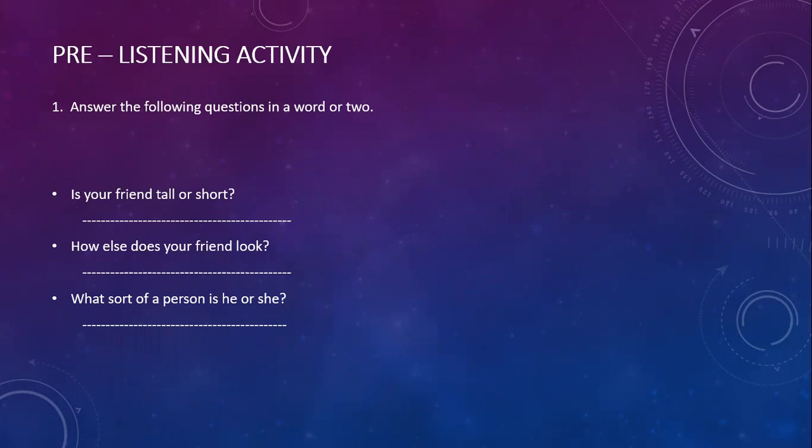Answer the following questions in a word or two. Is your friend tall or short? If your friend is tall, say 'Yes, my friend is tall.' If short, say 'My friend is short.' Next, how else does your friend look? He looks handsome or ugly — whatever it is. What sort of person is he or she? Is he a good person, a bad person, a sincere person? What kind of person?